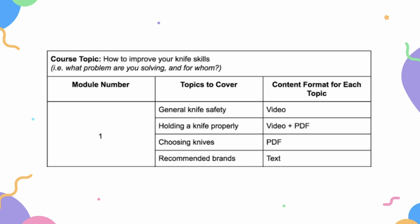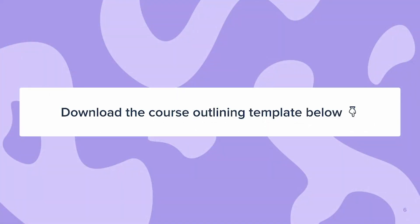On the right side of the outline, we're putting the content type that we're going to deliver each of those lessons in. We'll talk about choosing the right content types for your course modules next. In the meantime, grab the course outlining template below and take that end result and break it into its component parts. Figure out what modules you'll need to build, and then we can get to building.